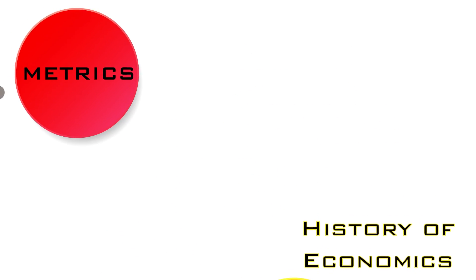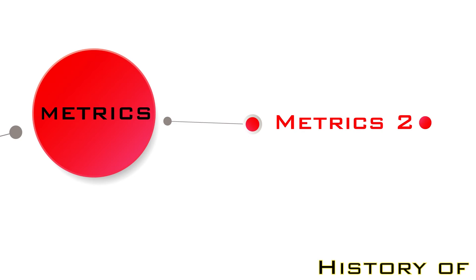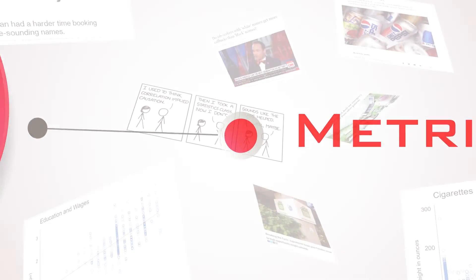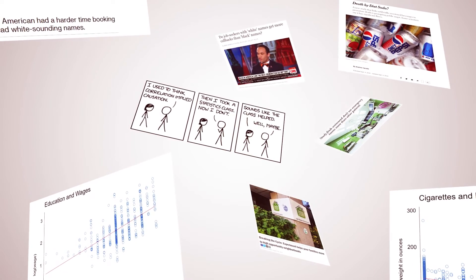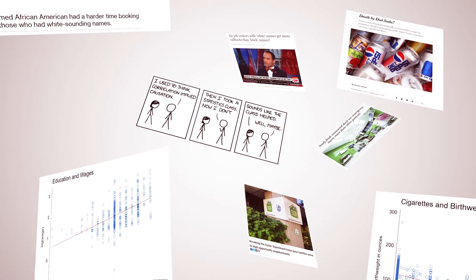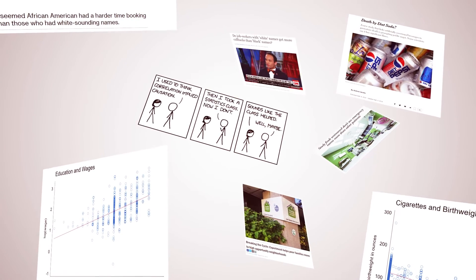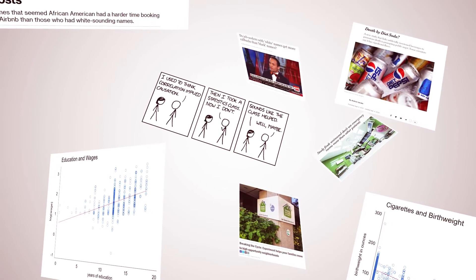Cadets who wish to pursue independent research and dig more into data take Econometrics II. This course builds upon the material covered in Econometrics I and is designed to teach students advanced concepts in estimation and causal inference.